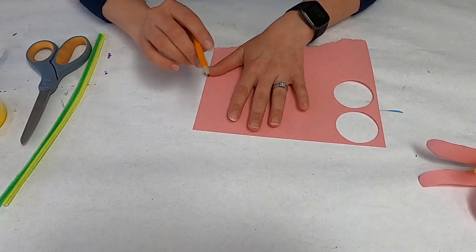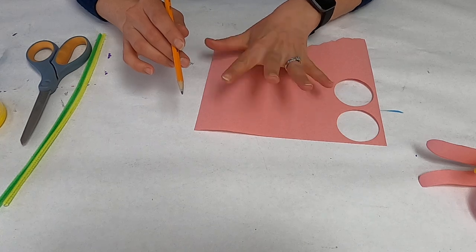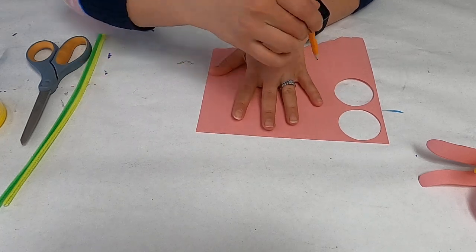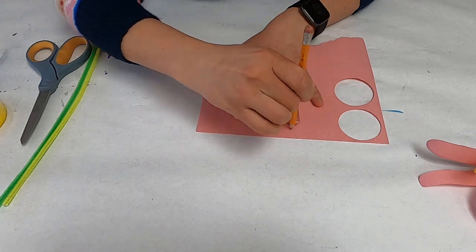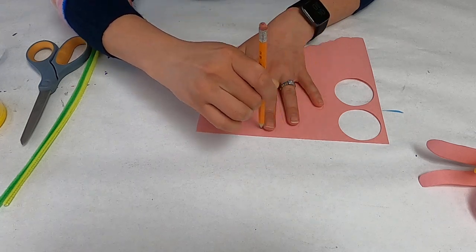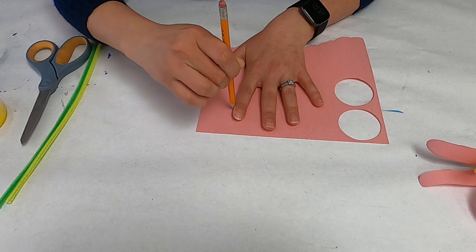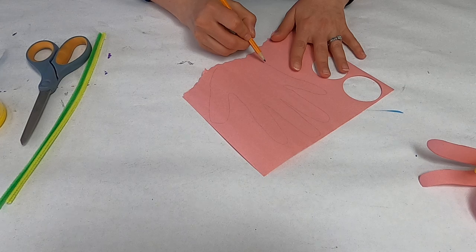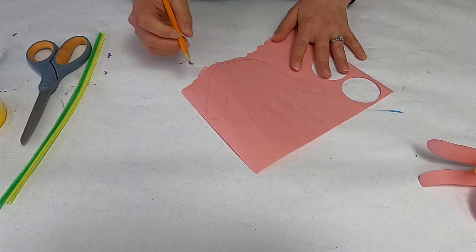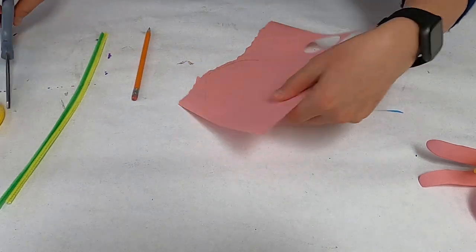You take your hand and you want to spread out your fingers and you want to trace around on a piece of paper. It's okay if you're not exactly that great with tracing, it's completely okay. Now at the bottom, you want to just round it out like that and then you want to cut it out.